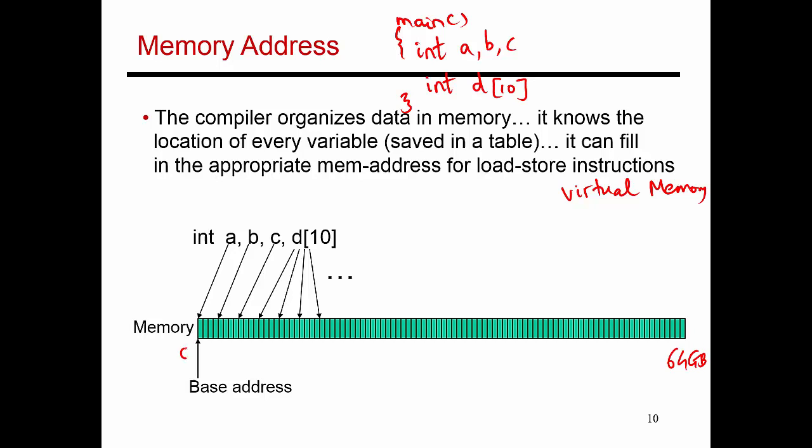And the address starts at zero and then grows all the way to 64 gigabytes. So that initial address is referred to as the base address, and all variables that you defined are given some space with an offset relative to that base address.